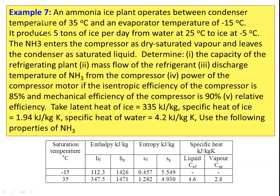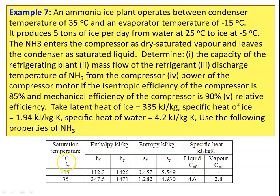Example 7. An ammonia ice plant operates between condenser temperature 35 degrees Celsius and evaporator temperature minus 50 degrees Celsius. It produces 5 tons of ice per day from water at 25 degrees Celsius to ice at minus 5 degrees Celsius. NH3 enters the compressor as dry saturated vapor and leaves the condenser as saturated liquid. Determine: capacity of the refrigeration plant, mass flow rate of refrigerant, discharge temperature of NH3 from the compressor, and power of the compressor motor if isentropic efficiency is 85% and mechanical efficiency is 90%. Calculate also the relative efficiency. Latent heat of ice is 335 kJ/kg, specific heat of ice is 1.94 kJ/kg·K, and specific heat of water is 4.2 kJ/kg·K. Properties of NH3 are given in the table.